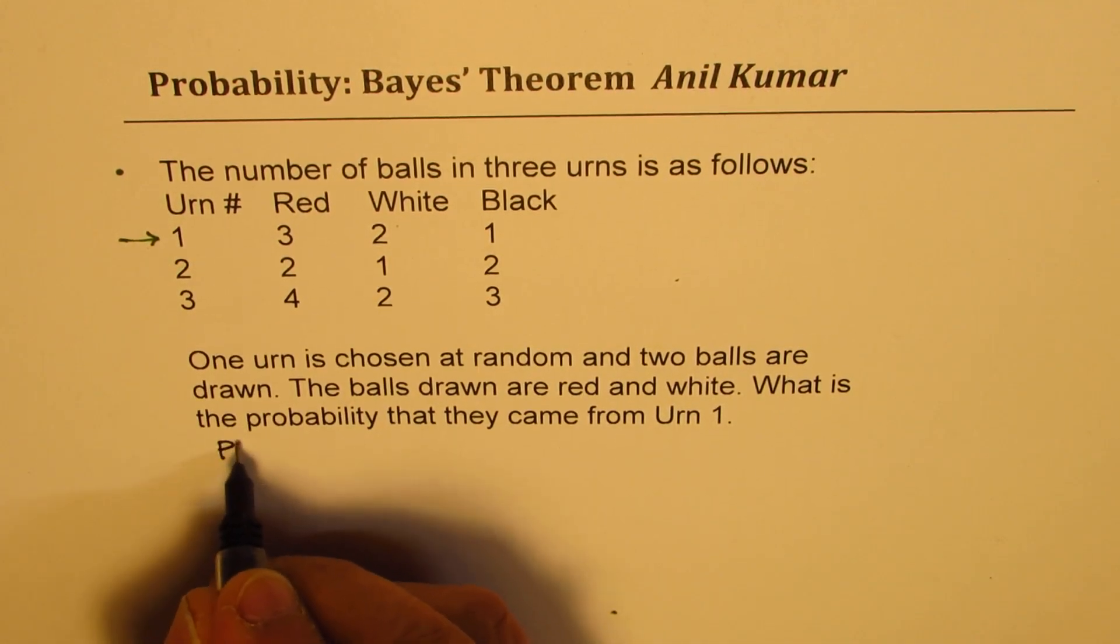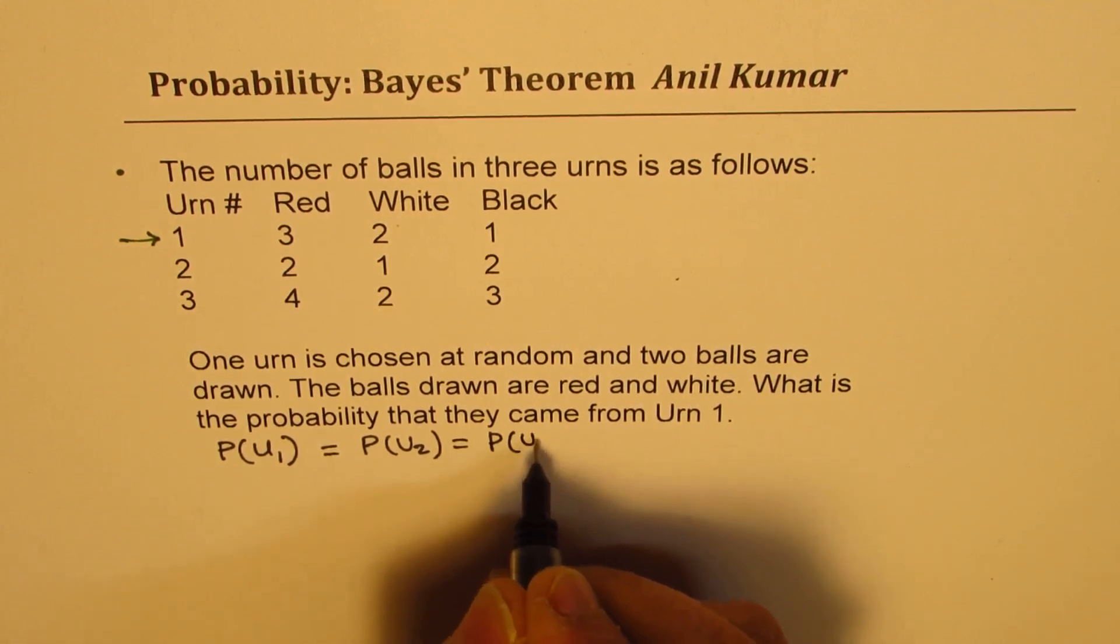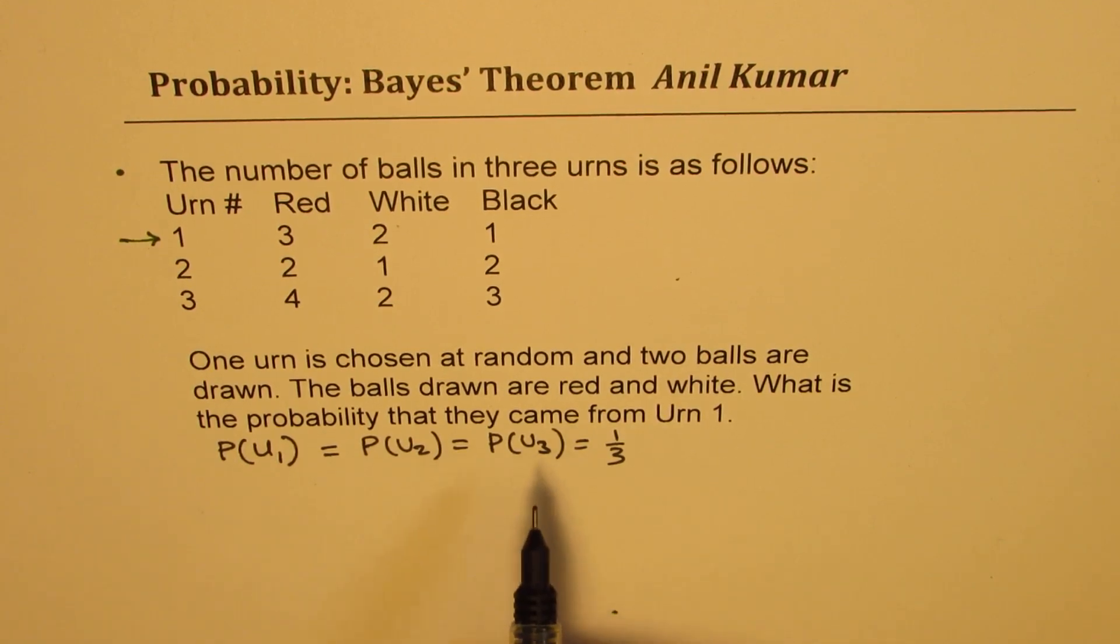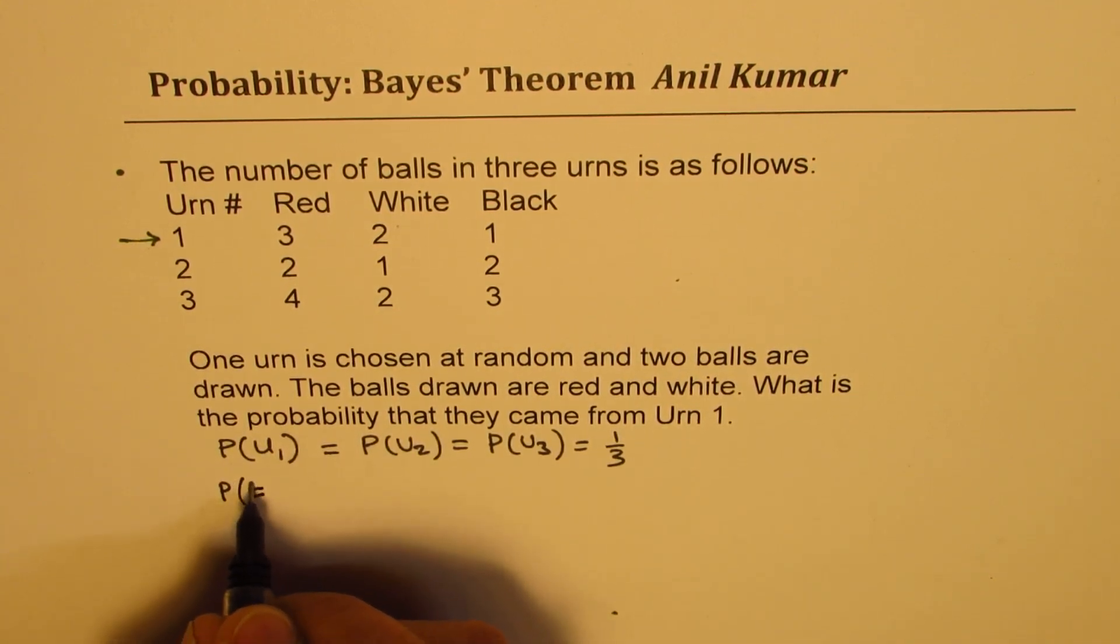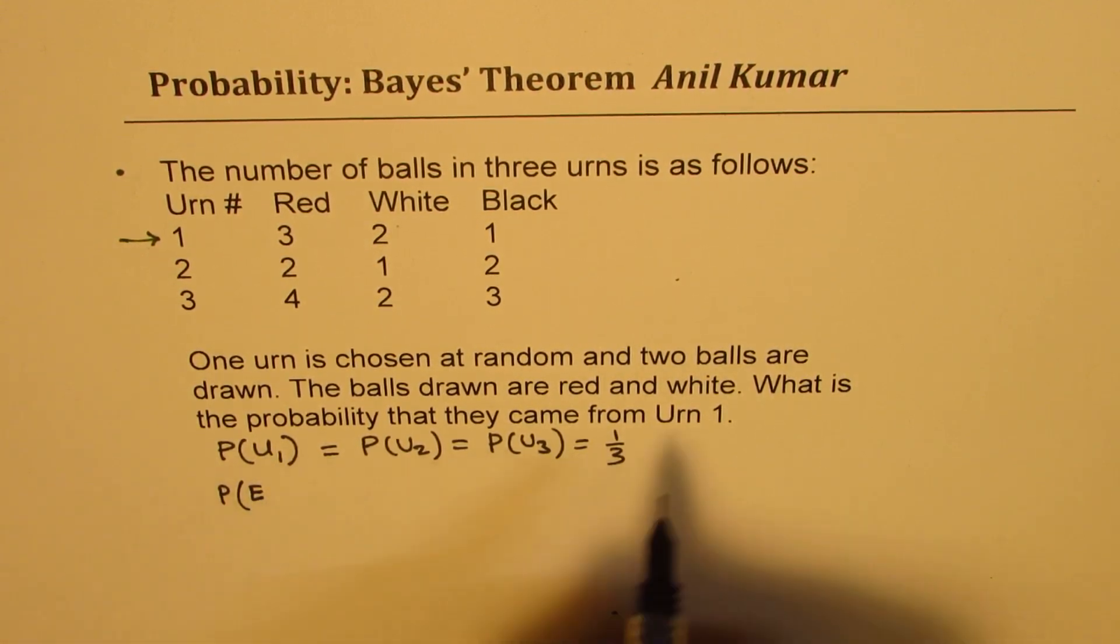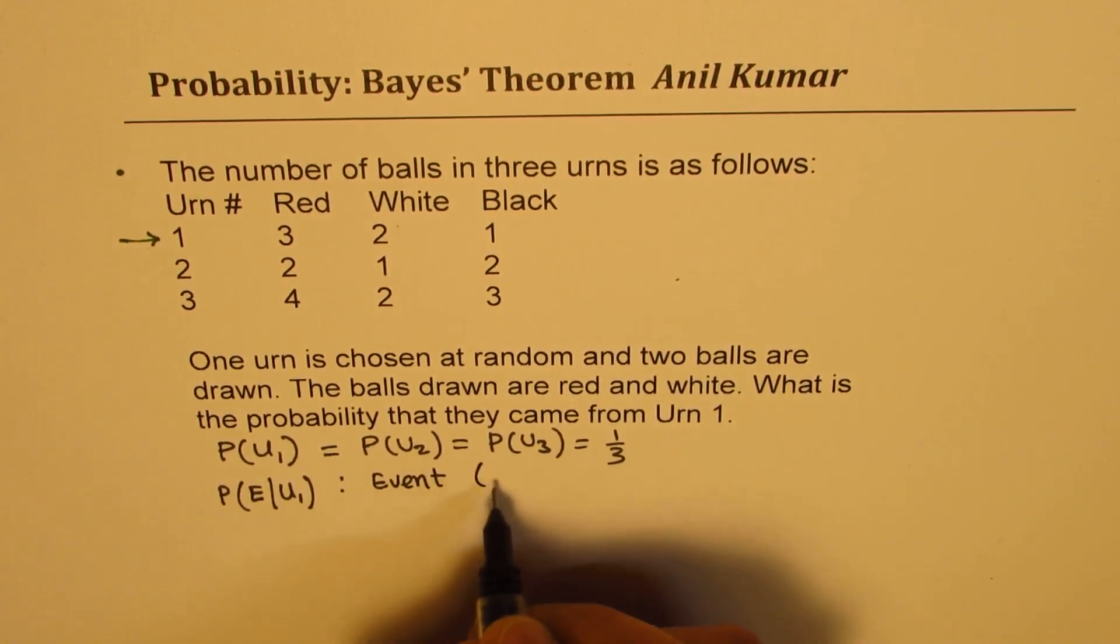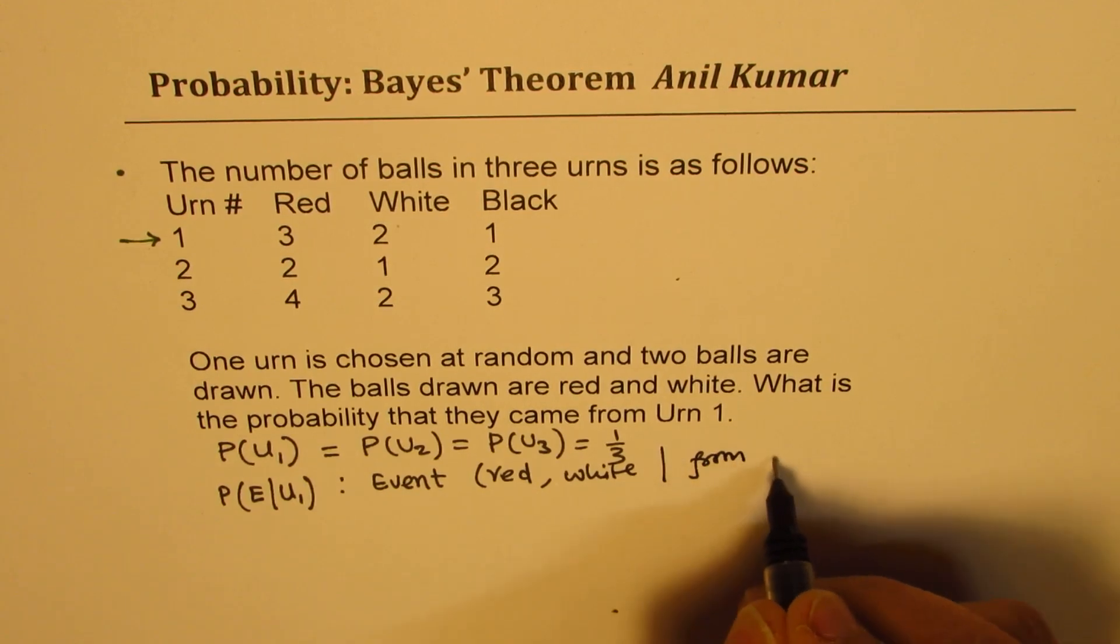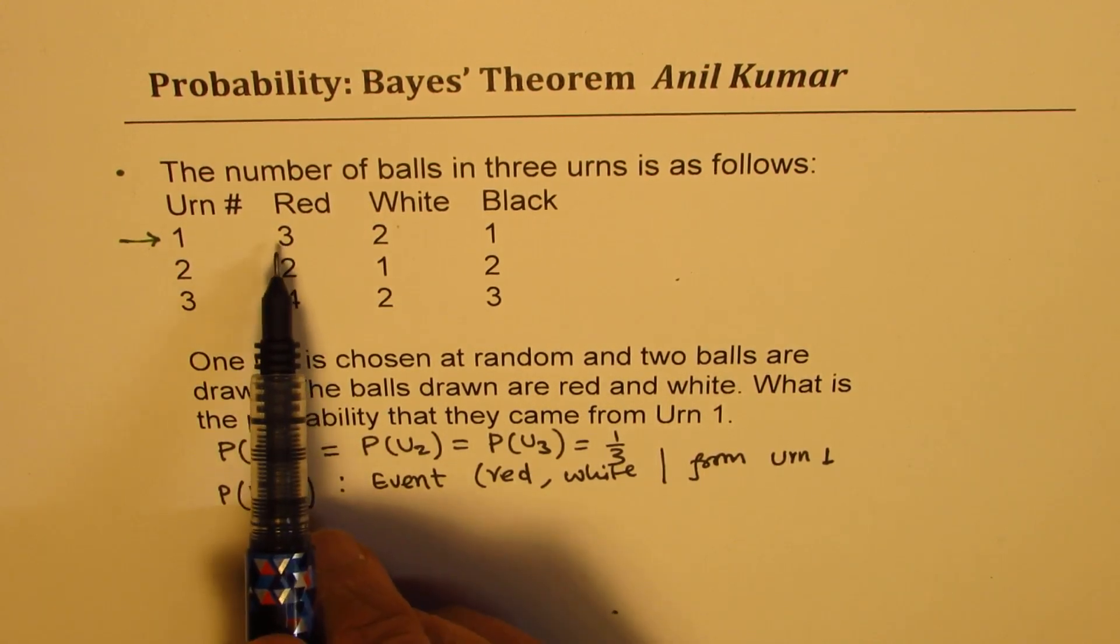So we can say that the probability of picking up any urn, which is either u1 or u2 or u3, it is equal to one over three. The second case is, we know red and white balls have been picked. Now we need to figure out that in our event, what is the probability of picking the red and white ball from urn one? That actually defines the event. That means red and white from urn one.